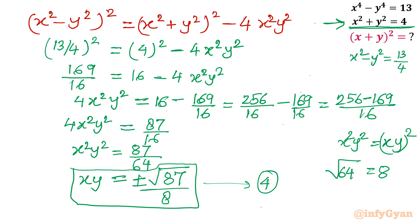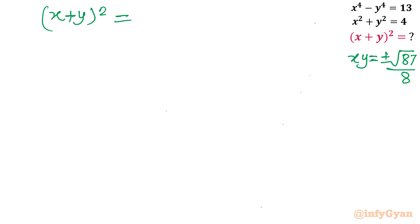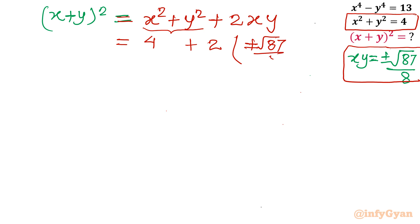Now I need to find (x plus y)². Expanding using the identity (a plus b)² equals a² plus b² plus 2ab, we get (x plus y)² equals x² plus y² plus 2xy. We know x² plus y² equals 4 from equation 2, and xy equals ±√87/8 from equation 4. Substituting: (x plus y)² equals 4 plus 2 times (±√87/8), which simplifies to 4 ± √87/4.